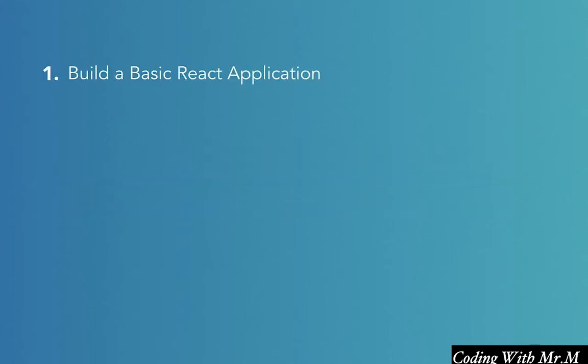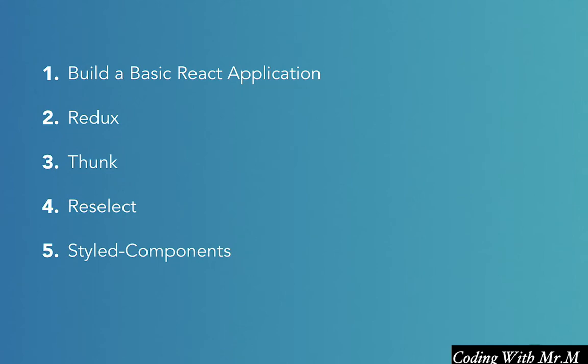To do this, we're going to start off by creating a basic React application from scratch, and then use this application as a jumping-off point to learn about the many different tools that are available to us, including Redux, Thunk, Reselect, and Styled Components. We'll learn the basics of each of these technologies, such as how it works and why it's useful, and I'll walk you through the process of adding and integrating each one into your React project. And last but not least, because I'm a big believer in the importance of tests in any codebase, we'll see how to test all the technologies that we cover in this course.